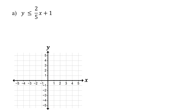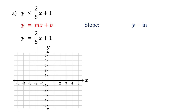To graph the boundary line, start by replacing the inequality sign with an equal sign. This changes the inequality into a linear equation. The equation is in slope-intercept form. The easiest way to graph an equation in this form is to use the slope and y-intercept.